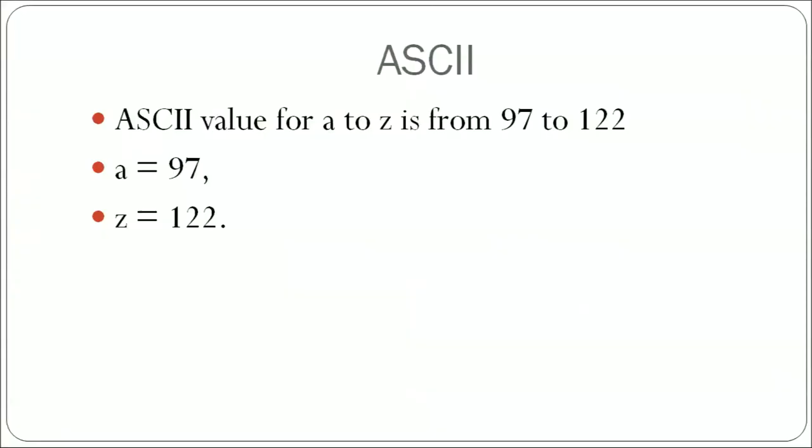ASCII is American Standard Code for Information Interchange. In the ASCII number system, it is a standard number system that understands a particular character set and uses the combination of these characters to form a number. So the conversion from basic characters to ASCII numbers — it has a particular code for every character. For small letter A, it is 97. The A to Z letters start from 97 and end at 122 because we have 26 letters.